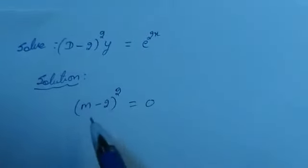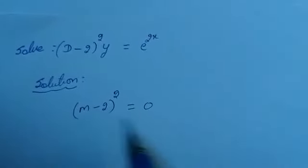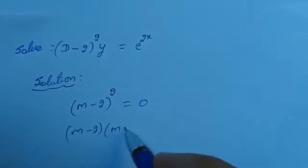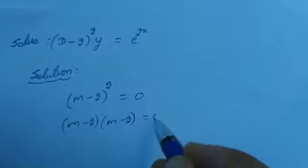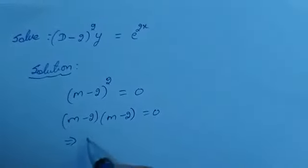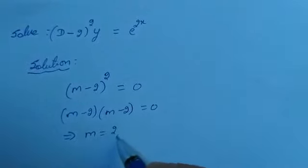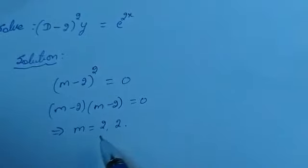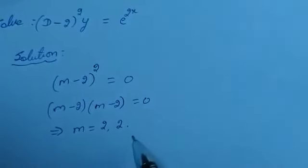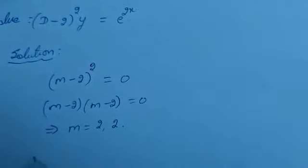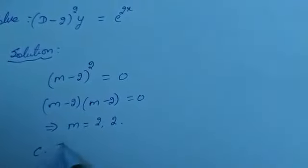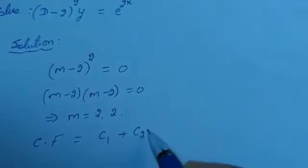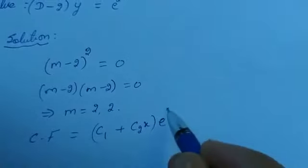Now, to solve the value for m: (m minus 2) whole square equal to 0 can be written as (m minus 2) into (m minus 2) equal to 0. So from this, we get m equal to 2, 2. The roots are real and equal. If the roots are real and equal, the complementary function is CF equals (c1 plus c2 x) into e raised to 2x.